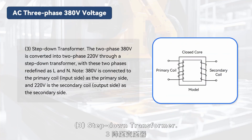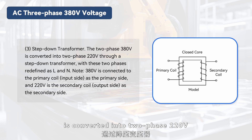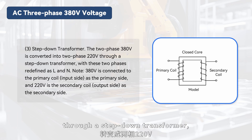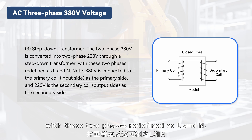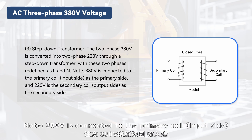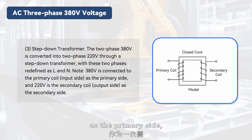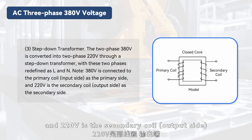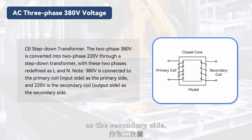Component 3: Step-down transformer. The two-phase 380 volts is converted into two-phase 220 volts through a step-down transformer, with these two phases redefined as L and N. Note: 380 volts is connected to the primary coil (input side) as the primary side, and 220 volts is the secondary coil (output side) as the secondary side.